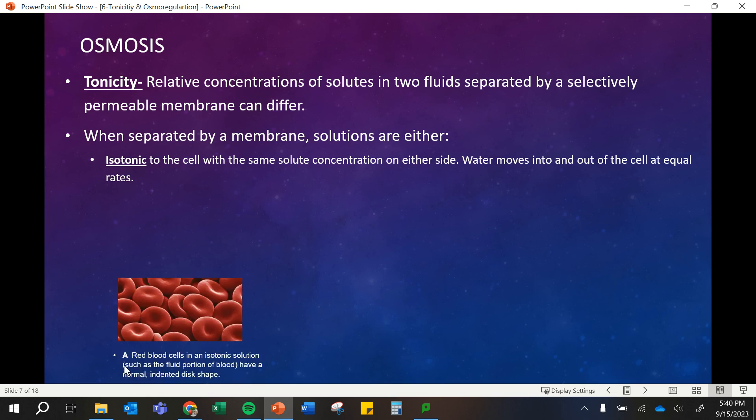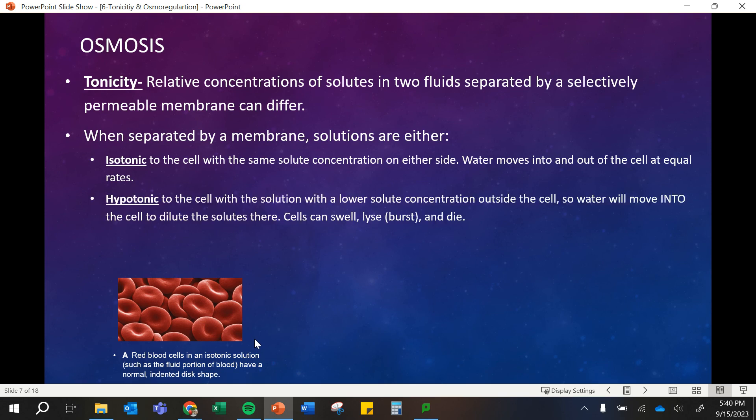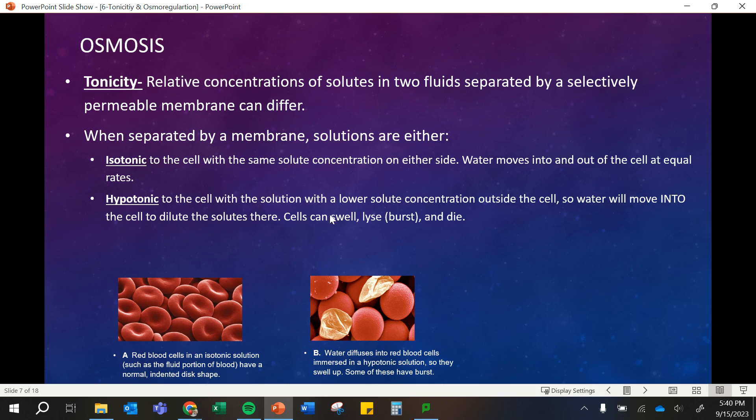An example of this is red blood cells here. They have their optimal shape because they're in an isotonic solution. Hypotonic solutions, this is where we have too much water on the outside, so we have a lower solute concentration outside the cell. So because of that, the water, there's more concentration inside the cell, the water will move into the cell, causing it to swell and sometimes burst or lyse and die. And that can be really harmful to cells.